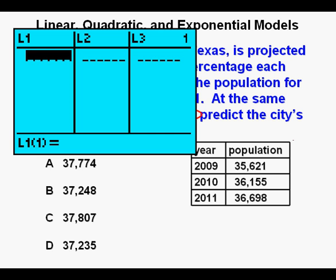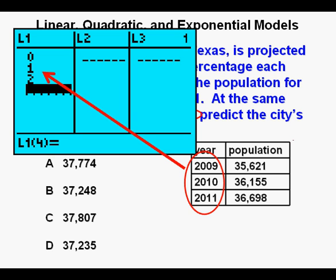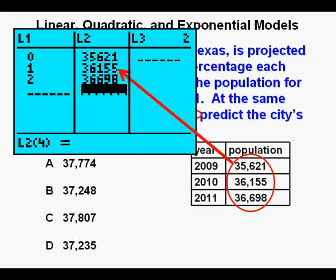We go to our graphing calculator and press STAT, then ENTER. For the first three years, 2009, 2010, and 2011, we can enter 0, 1, and 2. It just makes it easier. And next, under L2, we enter the population values for each year.